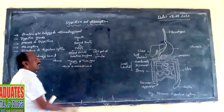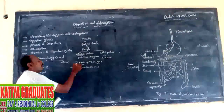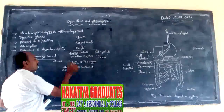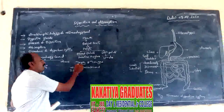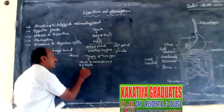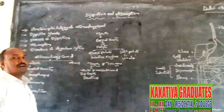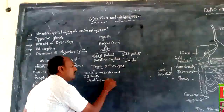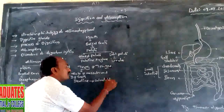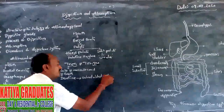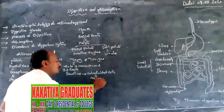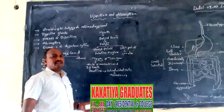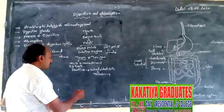The teeth are of ecto- and mesodermal origin. Adult human beings consist of 32 teeth. The bulk of the teeth is composed of dentine, which is secreted by odontoblast cells, which originate from the mesodermal layer. The complete tooth is classified into three parts.